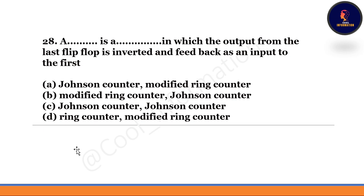Next question: A blank is a blank in which the output from the last flip-flop is inverted and fed back as an input to the first — option A: Johnson counter, modified ring counter; option B: modified ring counter, Johnson counter; option C: Johnson counter, Johnson counter; option D: ring counter, modified ring counter. The correct option is option A — a Johnson counter is a modified ring counter in which the output from the last flip-flop is inverted and fed back as an input to the first.